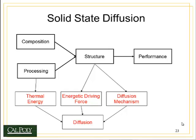And lastly, I need to have some kind of thermal energy, usually in the form of applied heat, so that the atoms have enough energy to actually move around inside the solid. Together, these three elements give us the process called diffusion.